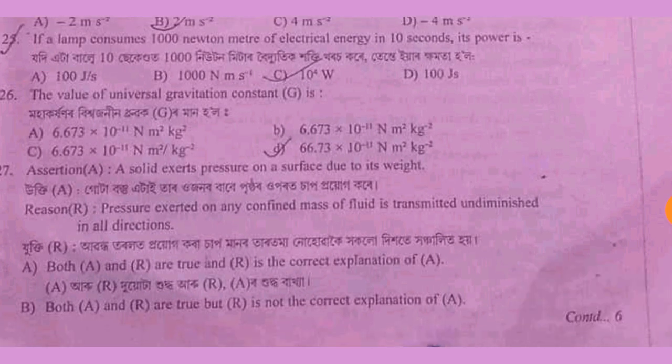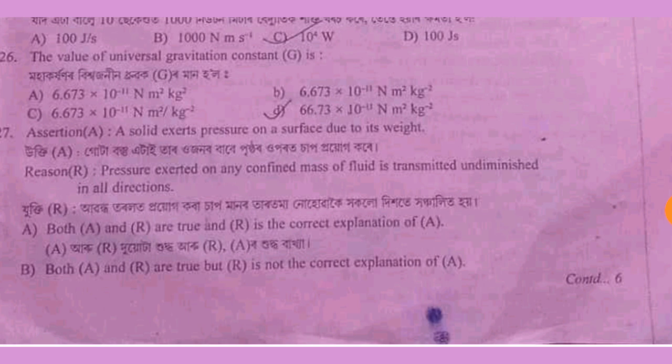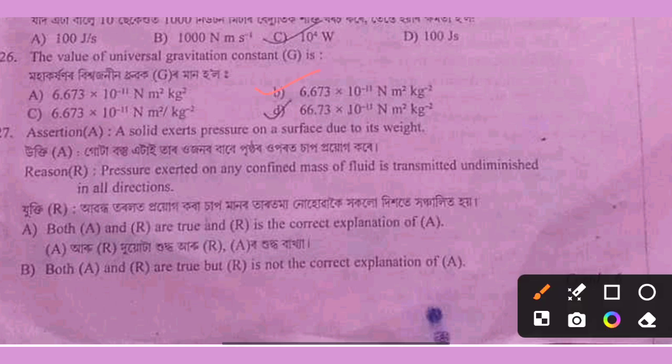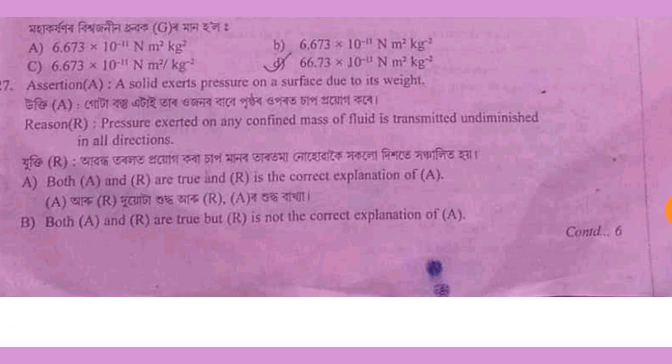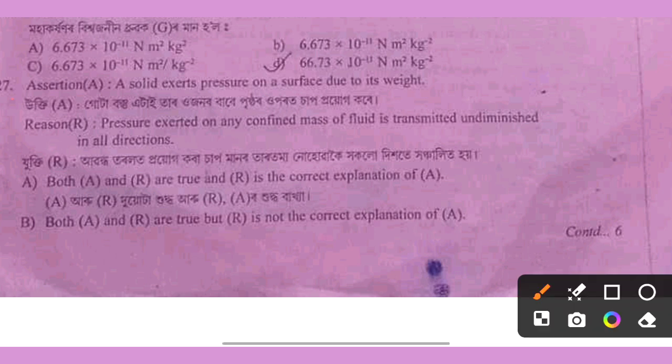The value of the universal gravitational constant is 6.673 into 10 to the power minus 11 Nm squared per kg squared. A solid exerts pressure on a surface due to its weight. Pressure exerted on any confined mass of fluid is transmitted undiminished in all directions — Pascal's law.